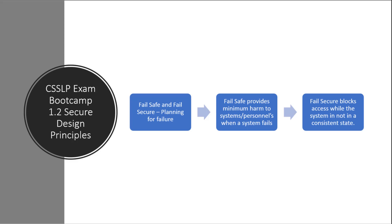Failsafe is really based on the idea that we want to minimize damage if the system fails. For example, how do we handle a transaction that is 70% completed and for some reason right at the split second it was going to complete, it didn't exactly complete its closure? How do we handle that?